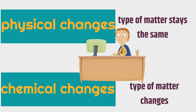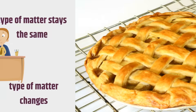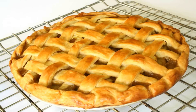You might say, what does that even mean? We're going to show you some examples, and then you're going to know the difference. Physical and chemical changes — it's going to be cool. Let's give you an example. This is a pie that has been baked. It looks like it's an apple pie, but who really knows what's inside. So this is a pie that has been baked.